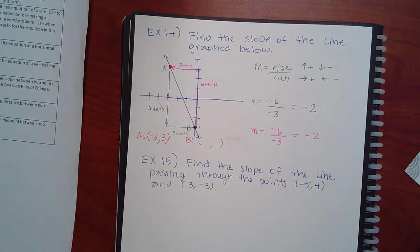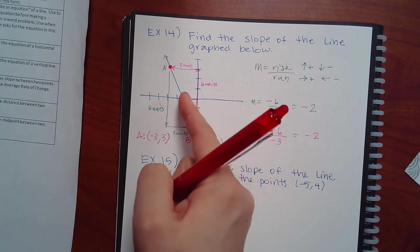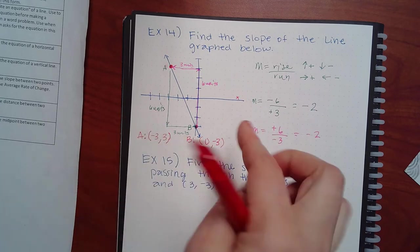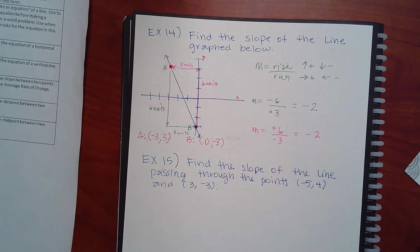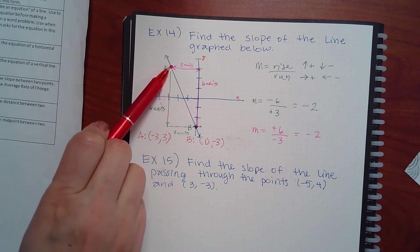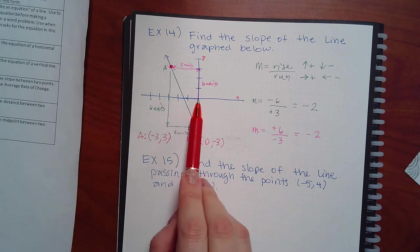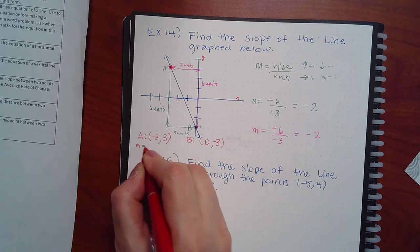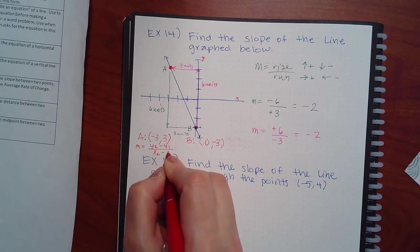What are the coordinates for point B? The x-coordinate is always left or right because this is the x-axis, and the y-coordinate is up or down because it's the y-axis. You always have to start at the origin and figure out how to get there. For point A at negative three, you move left three and up three, giving positive three for y.